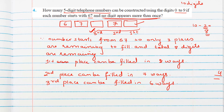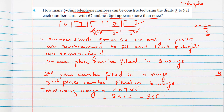We are constructing a 5-digit telephone number, but since 6 and 7 are already placed, we only fill these 3 remaining places. So the total number of ways is 8×7×6 = 336 ways.